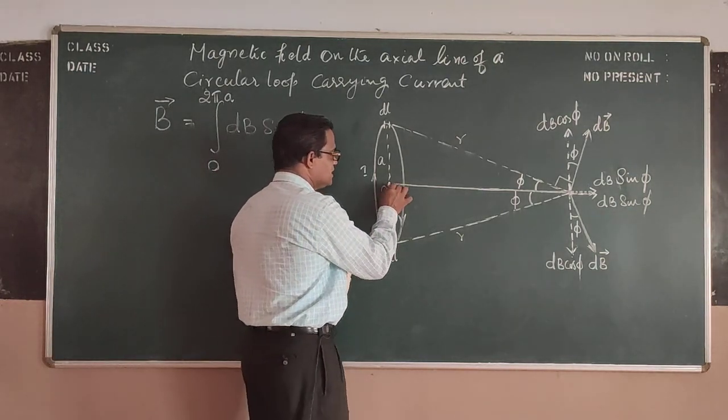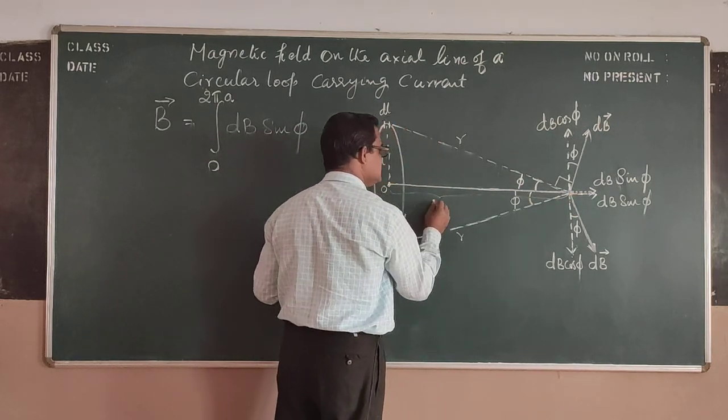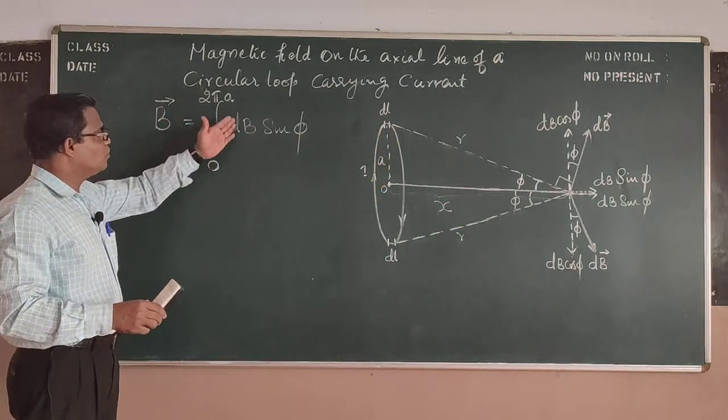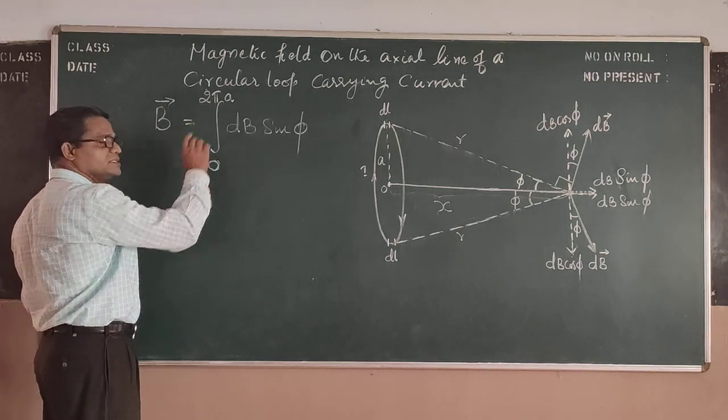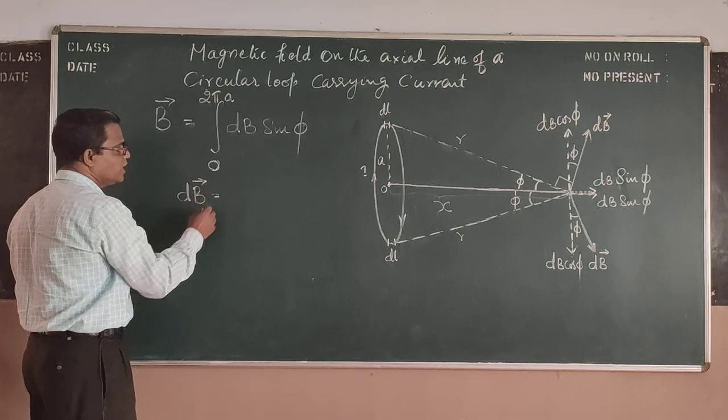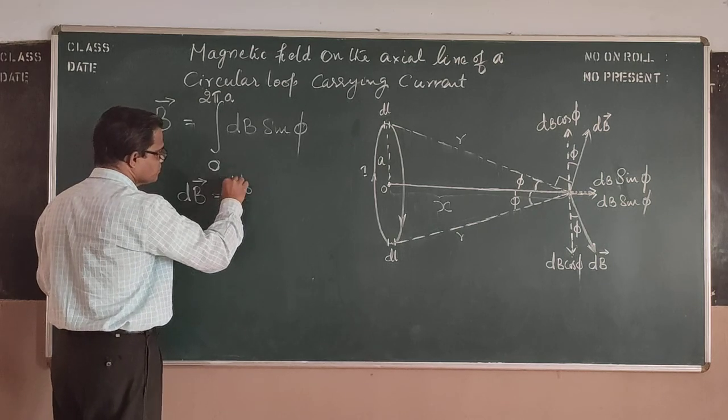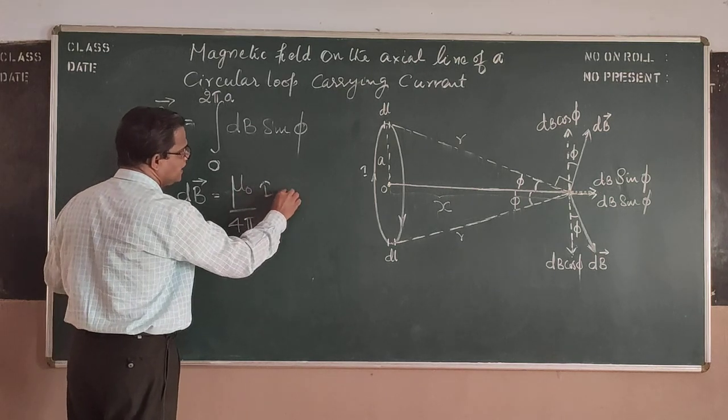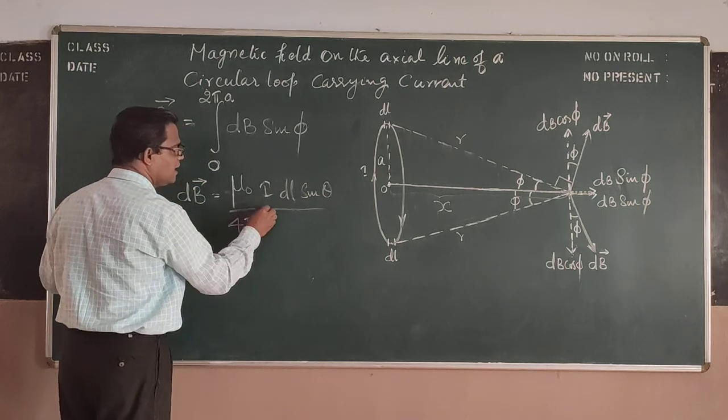Now, from the center to the point X, the axial distance, let me take this axial distance as X. Now we move on to this particular case. So what is DB? According to Biot-Savart Law, it is mu_0 by 4 pi into I DL sin theta by R square.